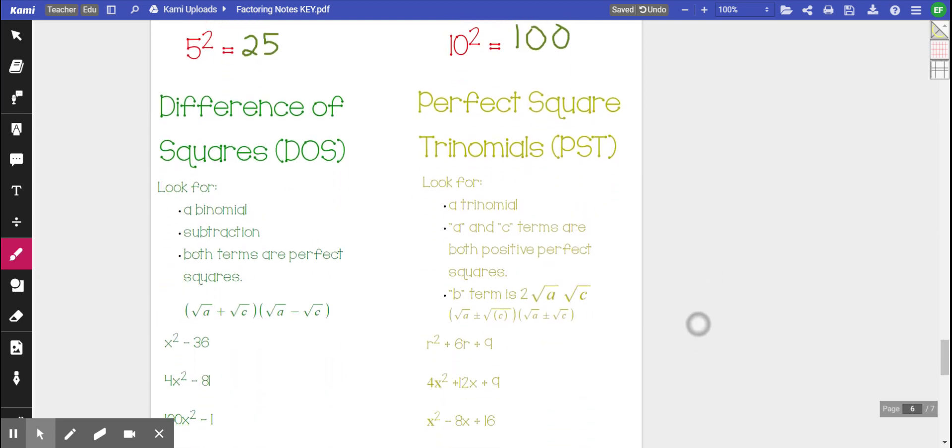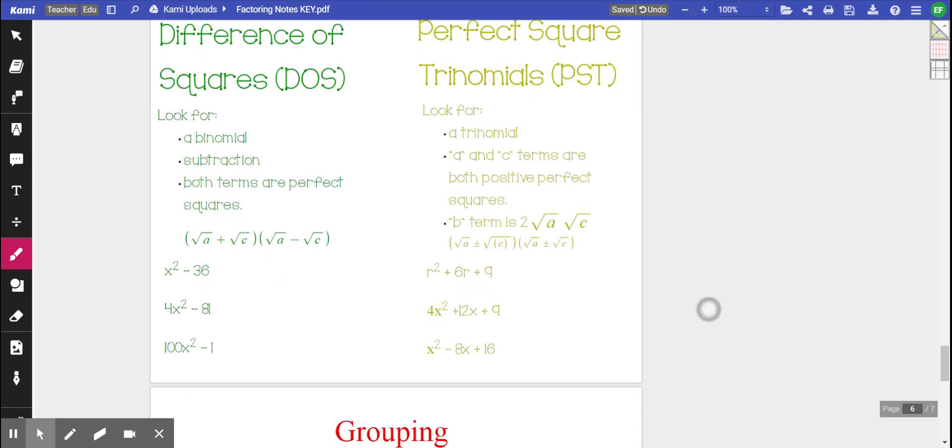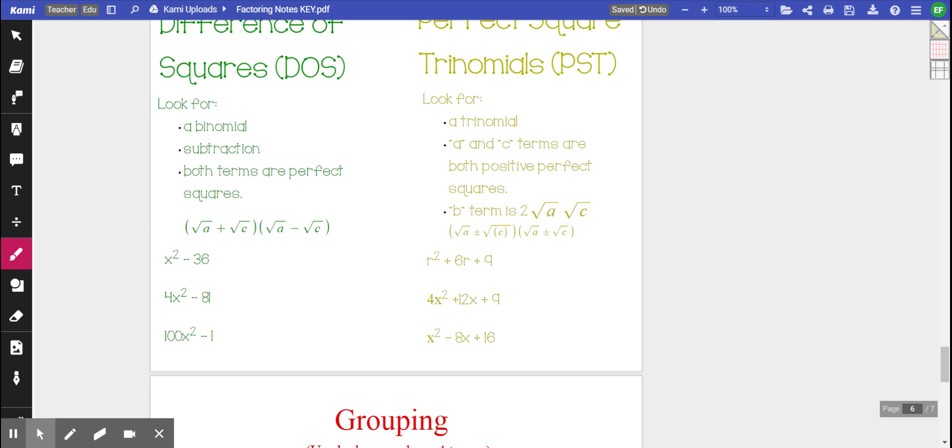Difference of squares: what you are looking for for this approach is that you're looking at a binomial that is being subtracted. So two terms that are being subtracted of which both of those terms have to be perfect squares. So we have our little rule here. We're going to take the square root of each one of our two terms, put them in the first and the last spots accordingly, and then our signs are going to be different. One will be a plus and one will be a minus. It doesn't matter which one's which but they must be different.